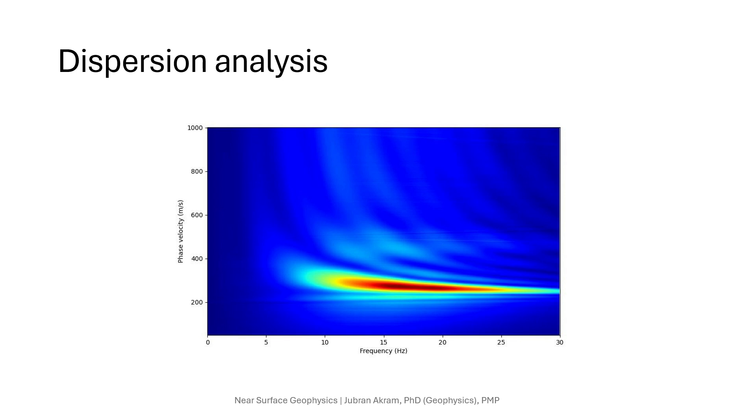We now have to pick the energy peaks on the dispersion curve. Typically the fundamental mode Rayleigh wave is analyzed, but other higher modes if available can also be picked and used in the inversion process, which is the next step.